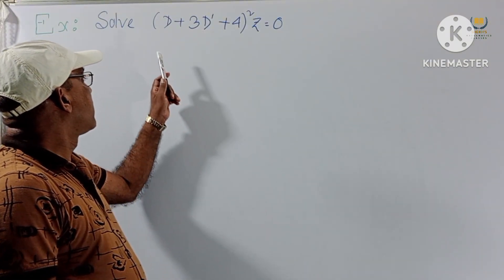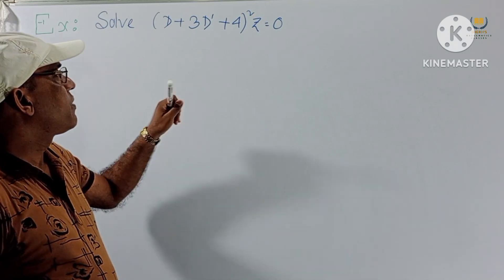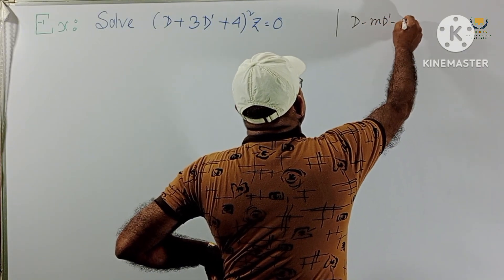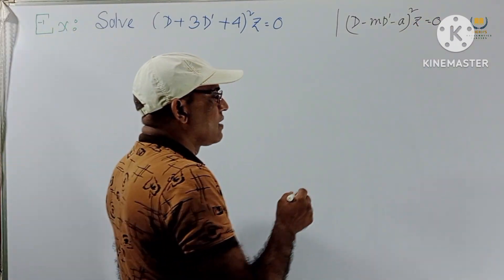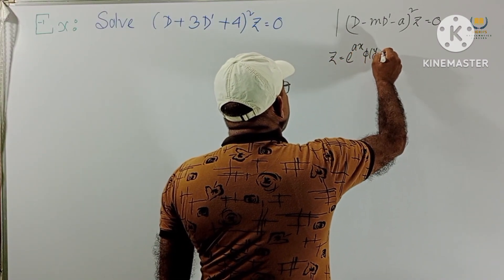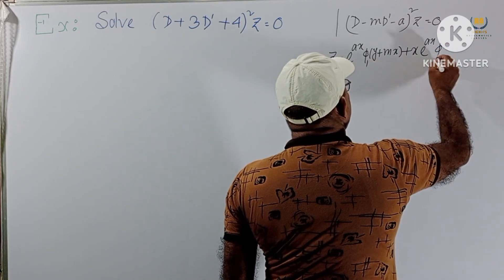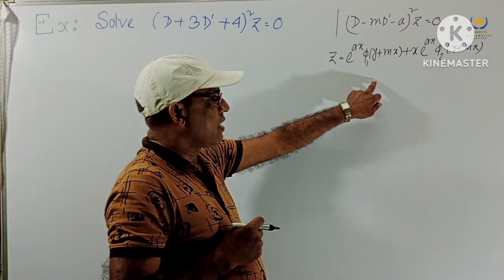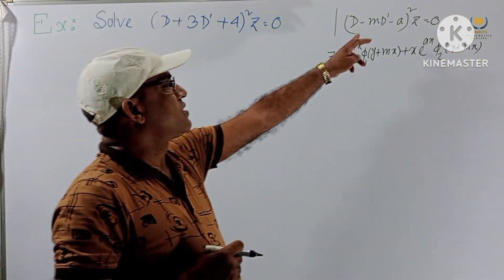Now consider another problem: Solve (D + 3D' + 4)²Z = 0. We know the formula for the squared form — we must remember D(MD' - A) squared. So if we get this, the solution is Z = e^(AX) φ₁(Y + MX) + X·e^(AX) φ₂(Y + MX). The form must be (D - MD' - A)² and both signs here are plus, so we convert to that form.